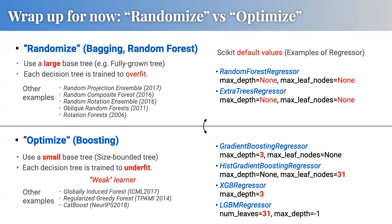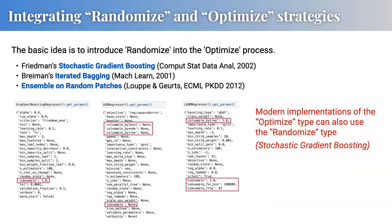You might wonder if we can combine both approaches — and the answer is yes. The gradient boosted algorithms can also use a randomized strategy during optimization: as we add trees one by one, we can also apply perturbations like subsampling. This is called stochastic gradient boosting — a straightforward mix of the two approaches. The basic idea remains two different directions: randomized type and optimized type.